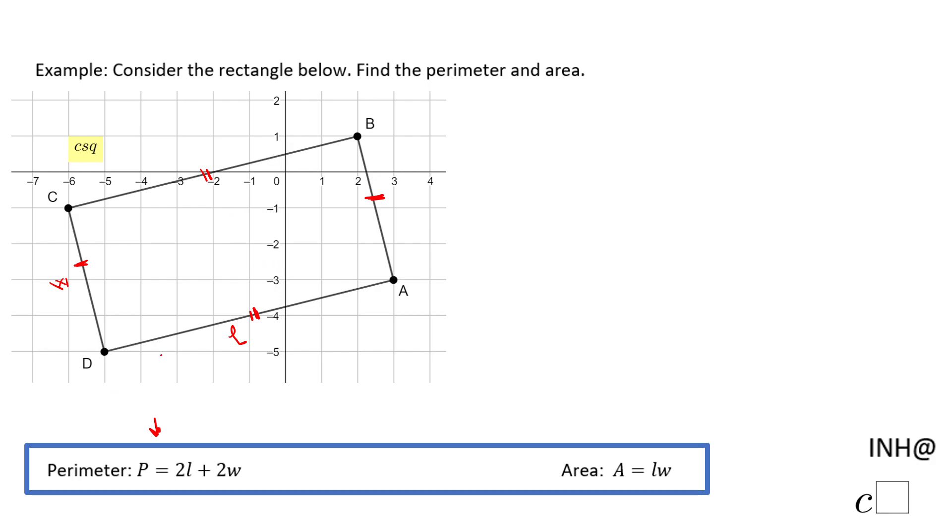Let's start with this length. You can use the distance formula with points A and D, or you can use this right triangle.